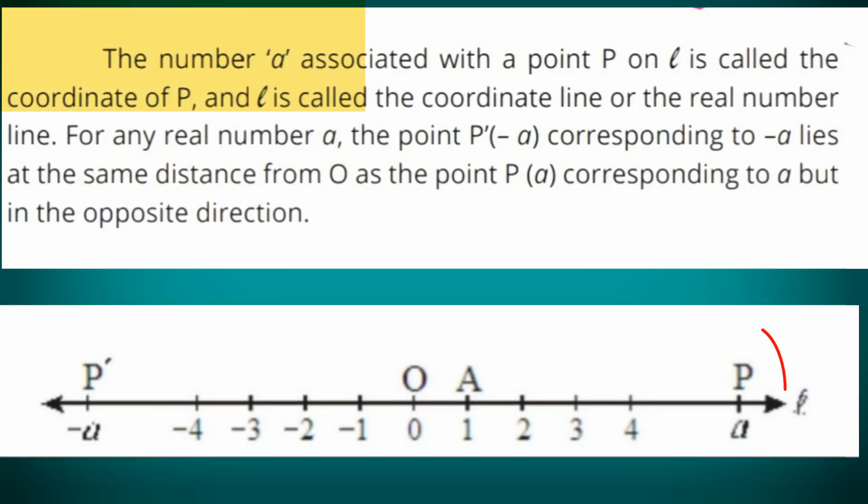The number A associated with the point P on L is called the coordinate of P, and L is called the coordinate line or the real number line.